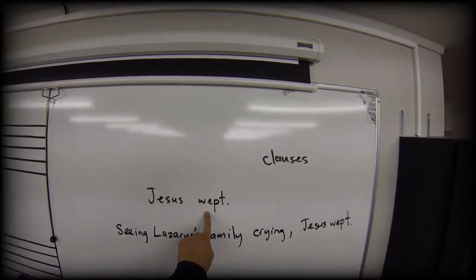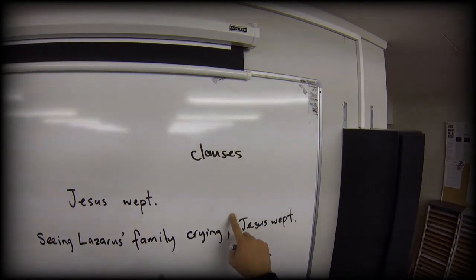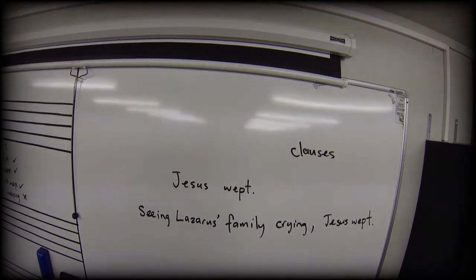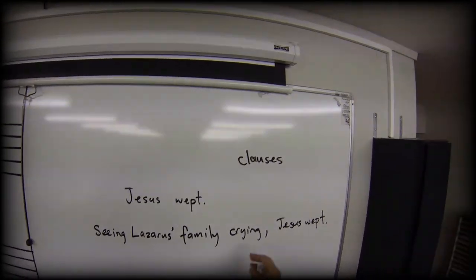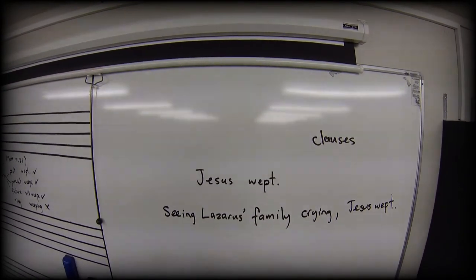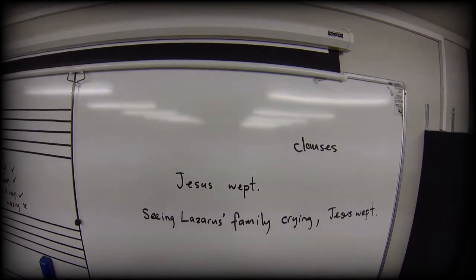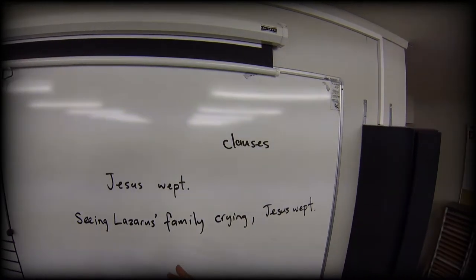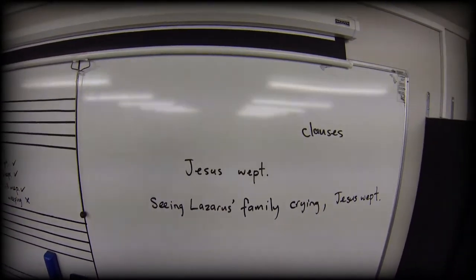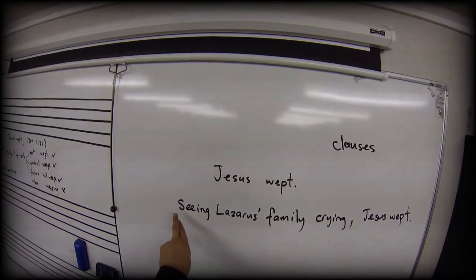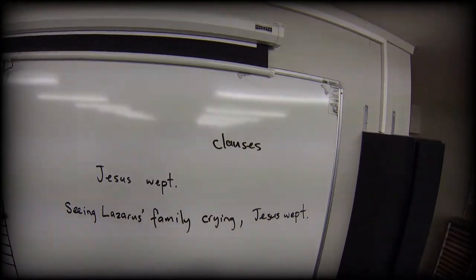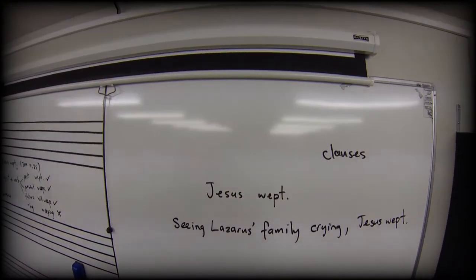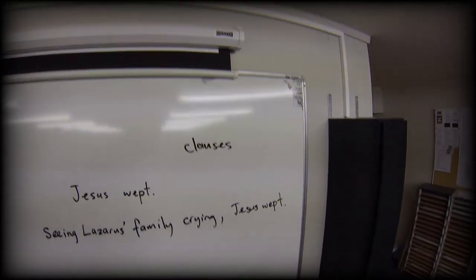Now, my central sentence is still 'Jesus wept.' What this clause is doing is creating something that was happening at the time that Jesus started weeping — so we're creating some kind of concurrent picture, something that's happening simultaneously with Jesus weeping. It also gives a sense of why Jesus was weeping, what sparked it off. You'll see that my clause here is separated from the main sentence, 'Jesus wept,' by a comma: 'Seeing Lazarus' family crying, Jesus wept.'